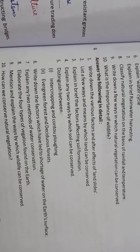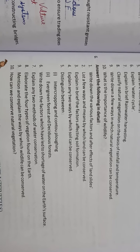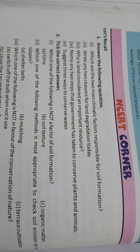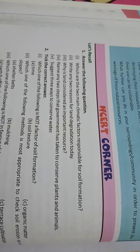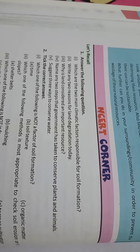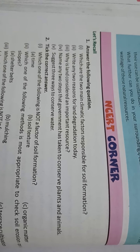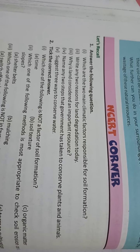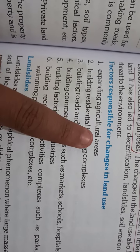The question answers are completed. Now we will study NCERT corner question answers. First, what are the two main climatic factors responsible for soil formation? The two factors are temperature and rainfall. Second, write any two reasons for land degradation today: first, expanding agriculture areas, and second, building roads and dams.